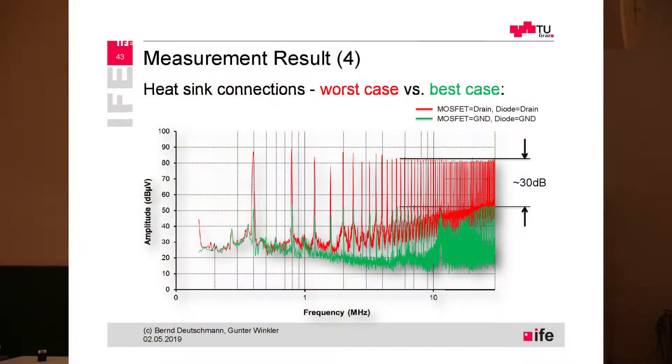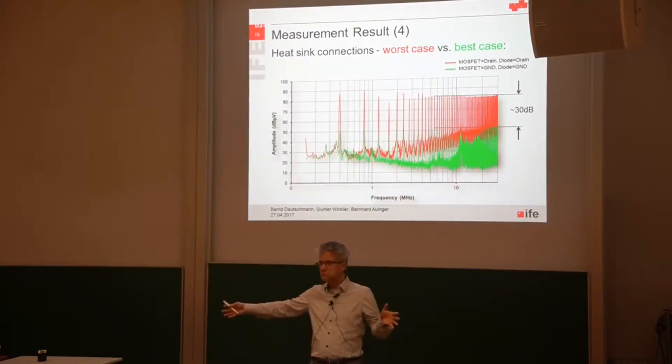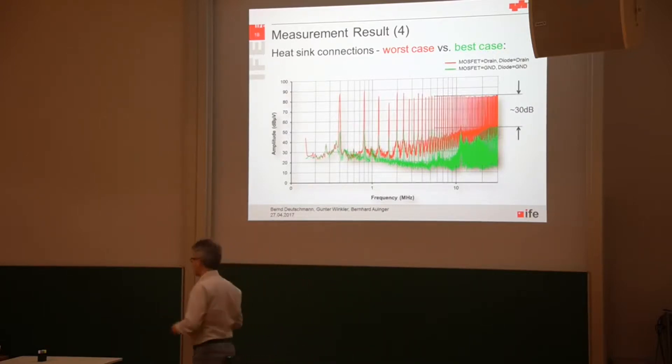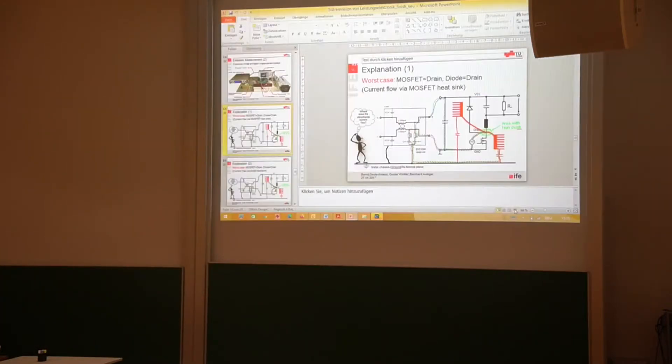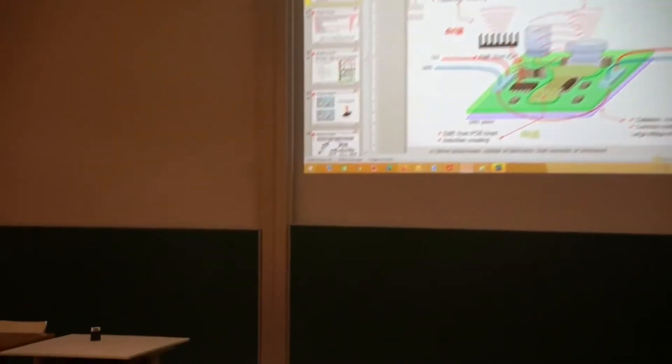Here you can see the difference between the conducted electromagnetic emission with the heatsink connected in the best case and in the worst case. As mentioned, it's pretty much 30 dB. Designing an additional filter that filters 30 dB over this whole frequency range is pretty expensive, so just by using the right knowledge and right tools, you can immediately avoid quite a lot of EMC problems already during the design phase.